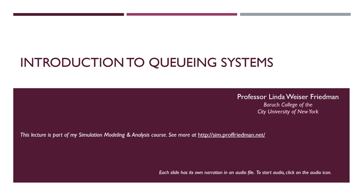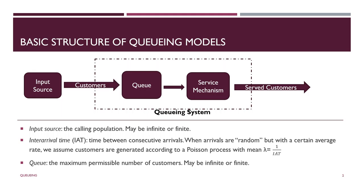Welcome to the lecture. Here we have the structure of the basic queuing model. You see in the diagram we've got the input source sending the customers into the queuing system. The customers may or may not have to wait in a queue, be delayed in queue, before they can go into service and come out as hopefully happy served customers. The input source is the calling population — where they come from, the source of the arrivals into the system. This population may be infinite, may be finite.